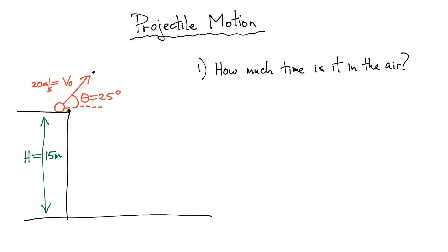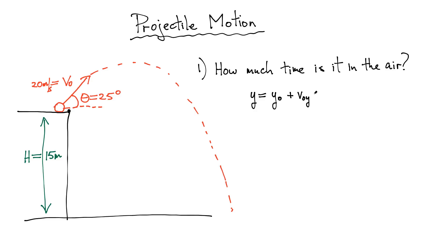Question one: how much time is it in the air? This projectile is going to do some trajectory like this and be in the air quite a bit of time. We're going to use the same approach as the previous case and look at the vertical motion. If you look at the horizontal motion, you don't know the horizontal displacement, but you do know the vertical displacement. Looking at our equation describing the vertical position, I'm going to take y equals zero at the bottom of the cliff, so my initial position for this problem is positive 15 meters.